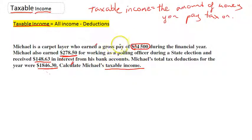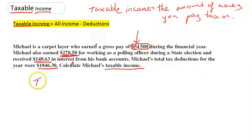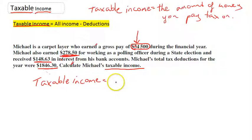You can see that Michael's been pretty busy this year. He had a job as a carpet layer for the full year. He also worked at the polling station during the state election. And he also earned some interest from the money in his bank accounts. So now if we take a look at it, taxable income is equal to all the income he received minus the deductions.